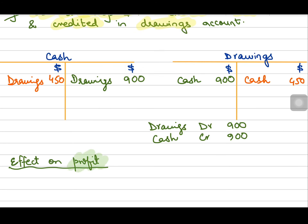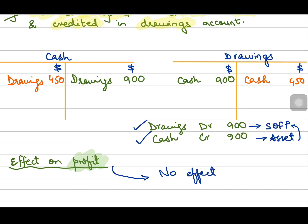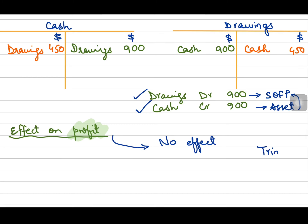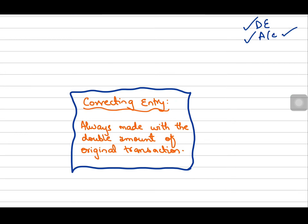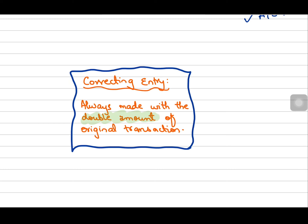What is the effect of correcting this error on the profit? Drawings are not in the income statement — they are part of the statement of financial position. Cash, being an asset, is also in the statement of financial position. So there will be no effect on profit. It will affect the drawings account, the cash account, and capital, but profit will remain unaffected. This error also will not affect the balancing of your trial balance, because the double entry is complete and accounts used are correct — only the sides were wrong. Whenever you correct an error of reversal, always make the entry with double the original transaction amount.